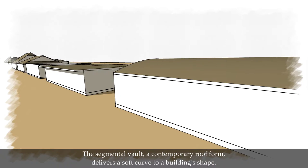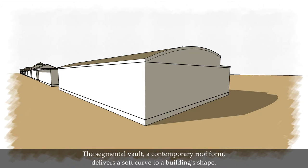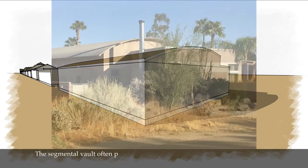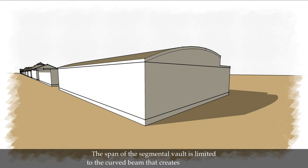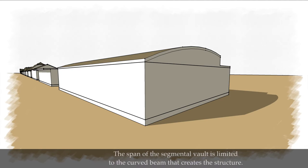The segmental vault, a contemporary roof form, delivers a soft curve to a building shape. The segmental vault often pairs with sections of flat roofs as the segmental form does not easily intersect with other segments or other types of roof forms. The span of the segmental vault is limited to the curved beam that creates the structure.